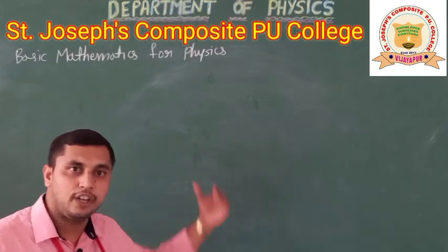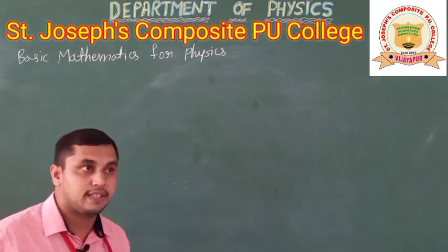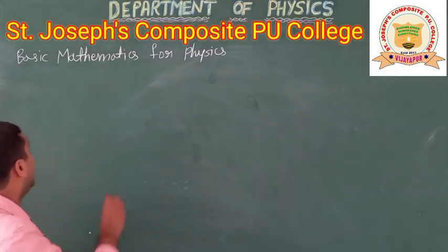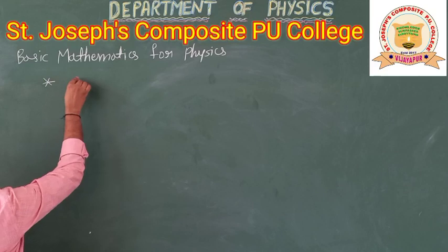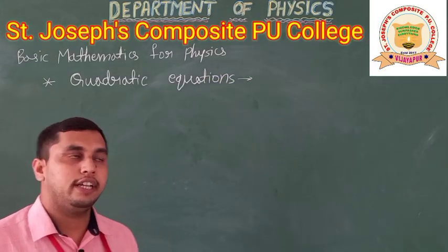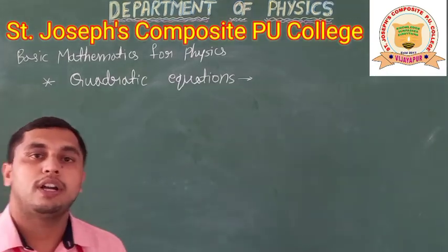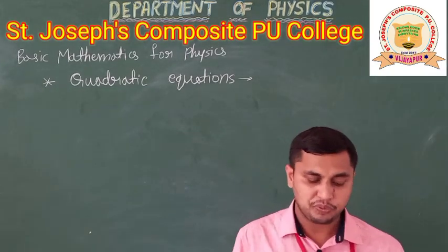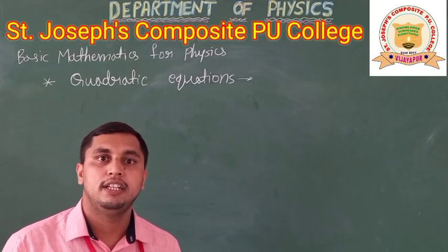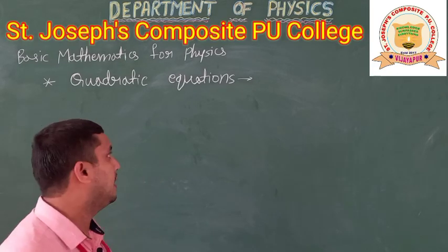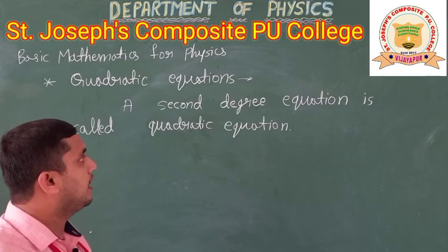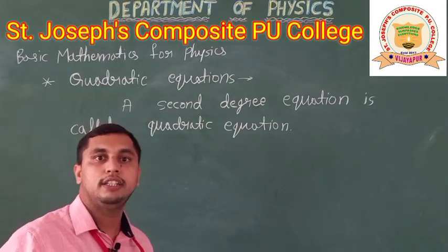Let us recall what basic mathematics is needed for physics. We will start with the quadratic equation. I hope you already know the quadratic equation. A second degree equation is called a quadratic equation.